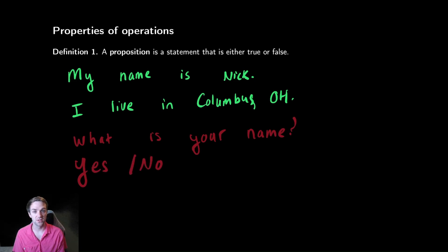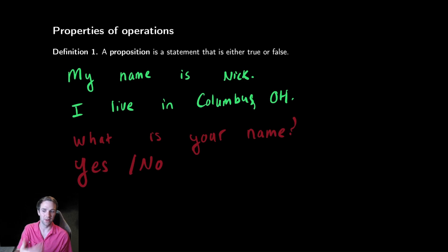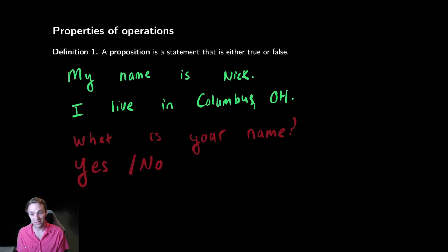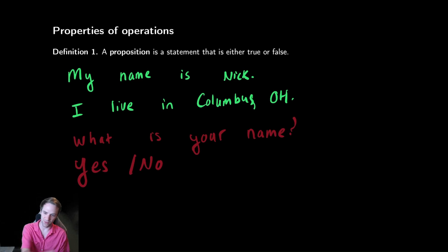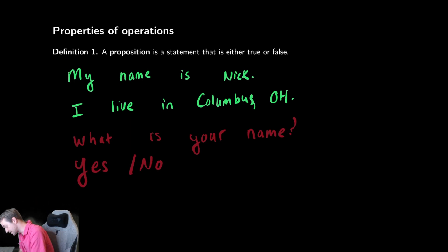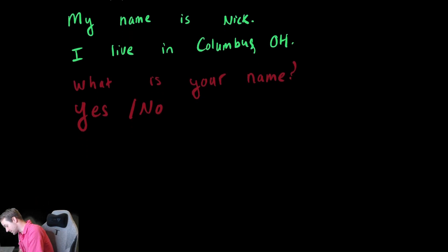Other things that aren't propositions are things like opinions, like 'Avatar: The Last Airbender is the greatest show of all time.' I can believe that to my core all I want, but it's still not a statement of truth or fact. Something like 'Avatar: The Last Airbender is one of the best reviewed shows of all time' — maybe that's something you could argue is true or false, but opinions are also not propositions. So let's write that down: 'ATLA is the best show.'